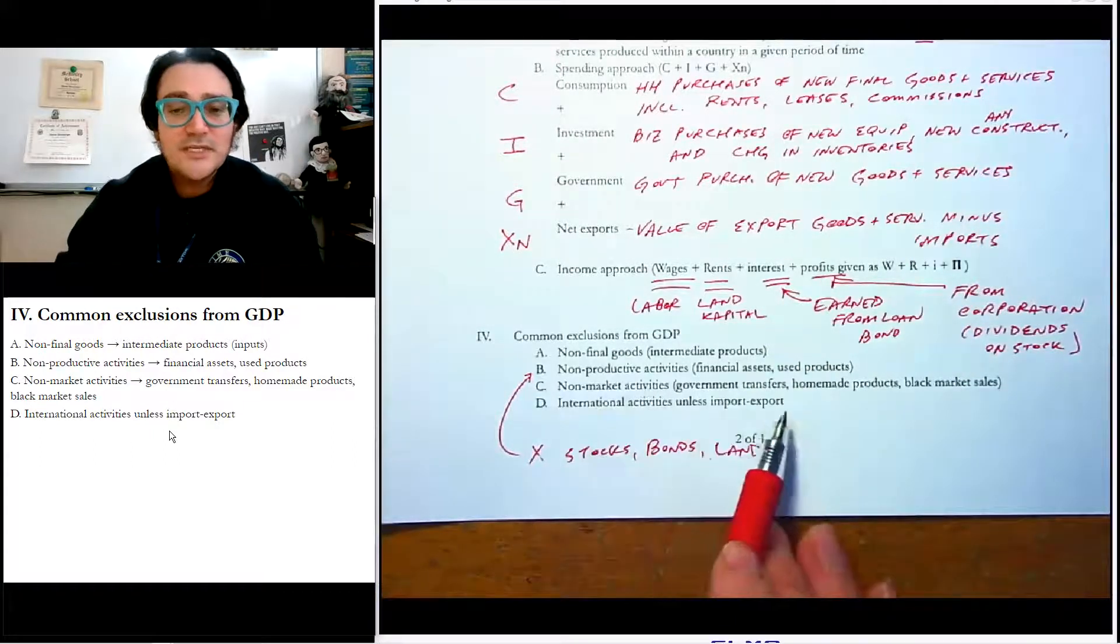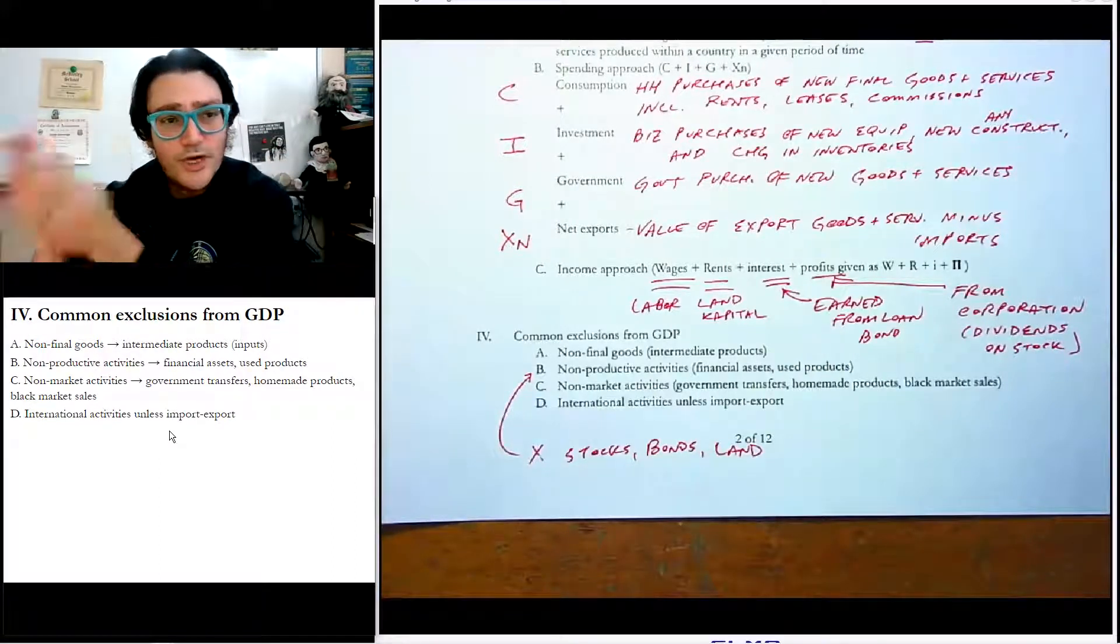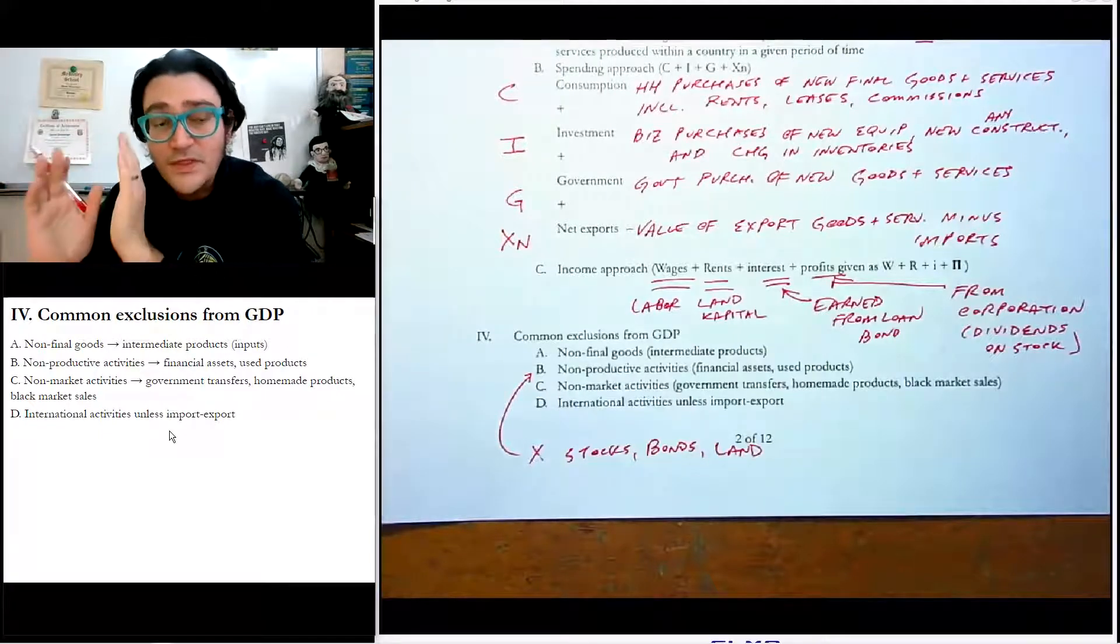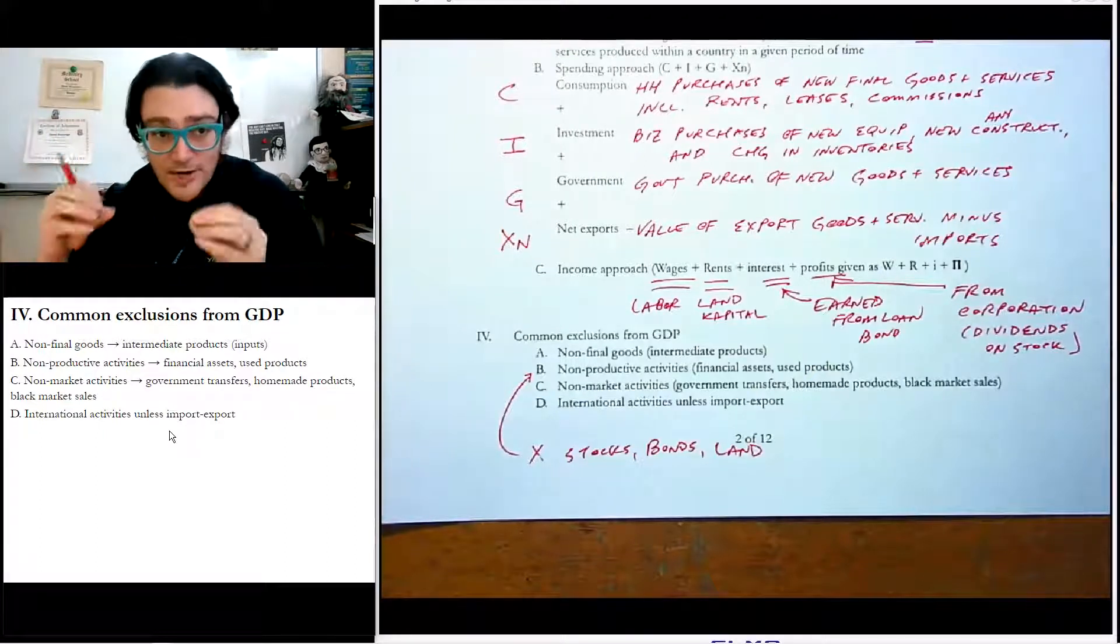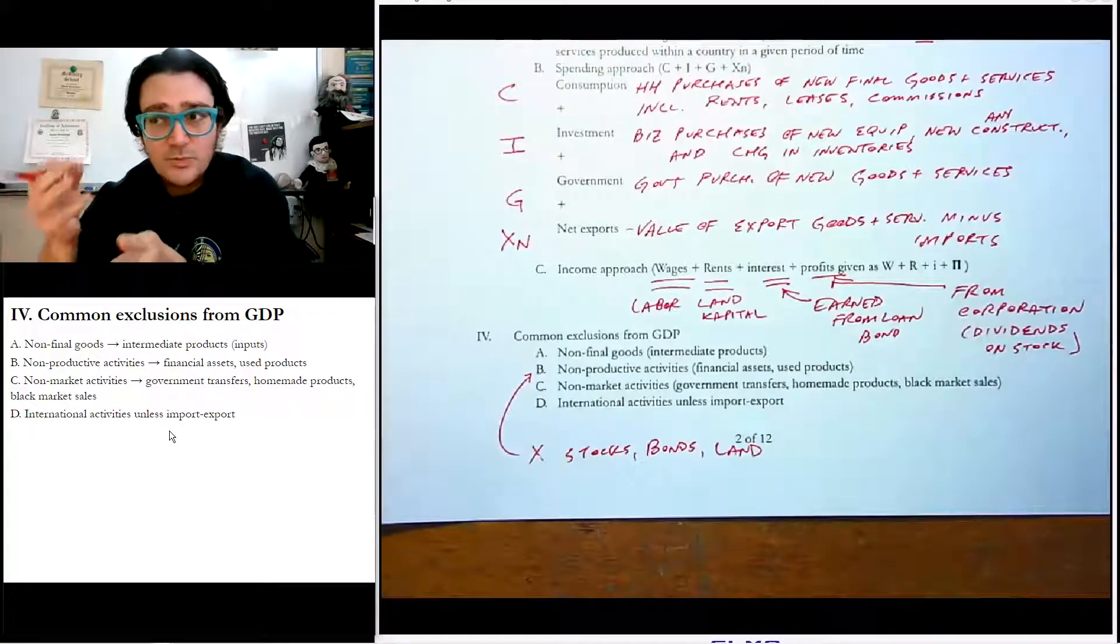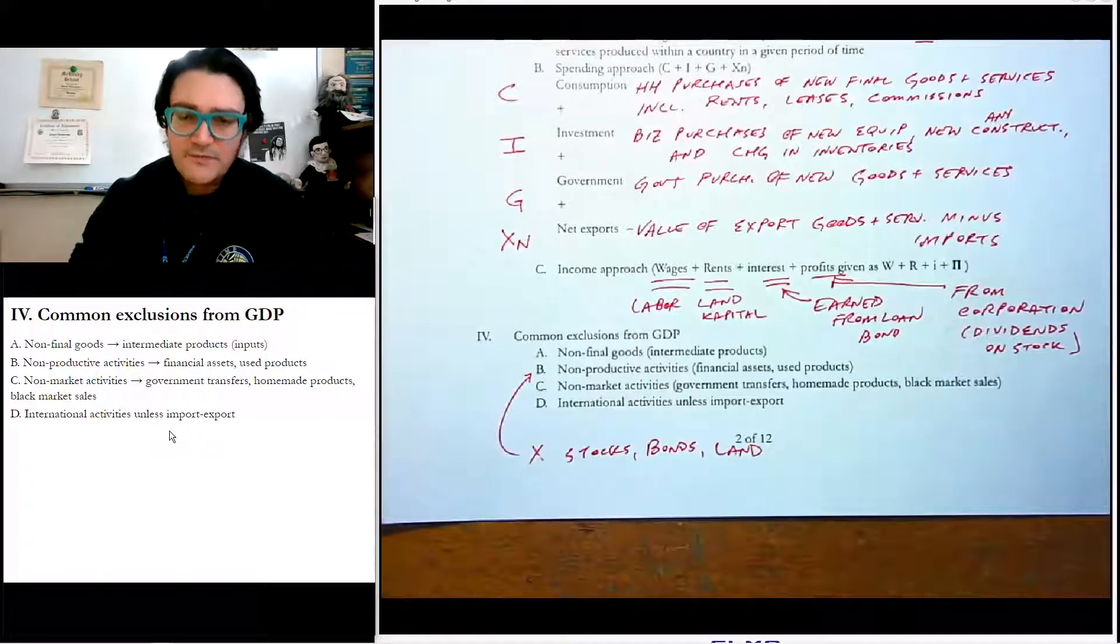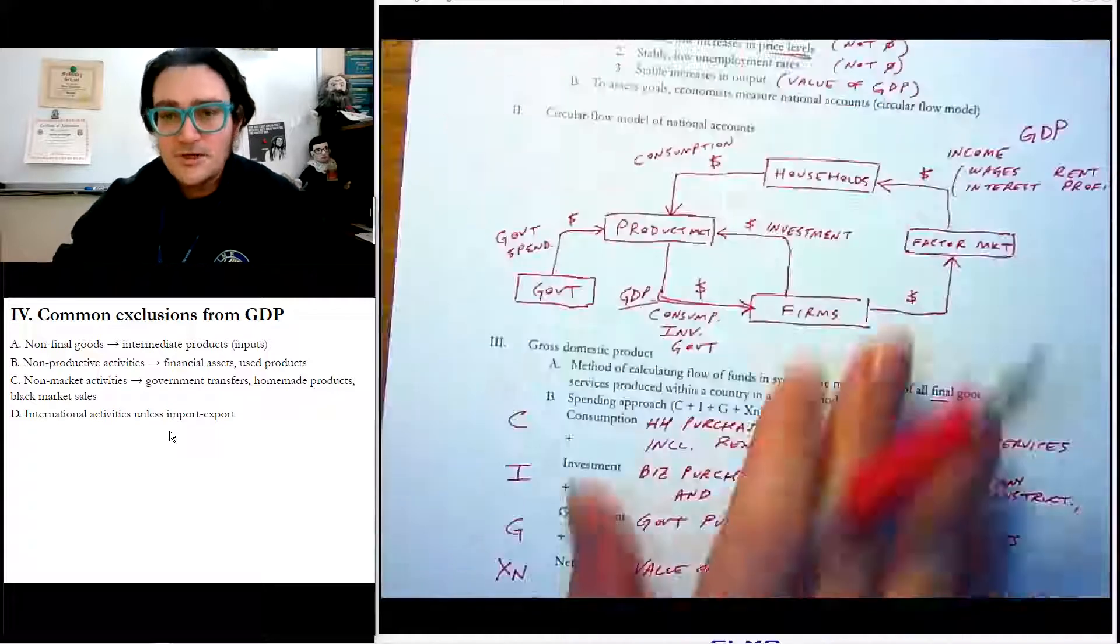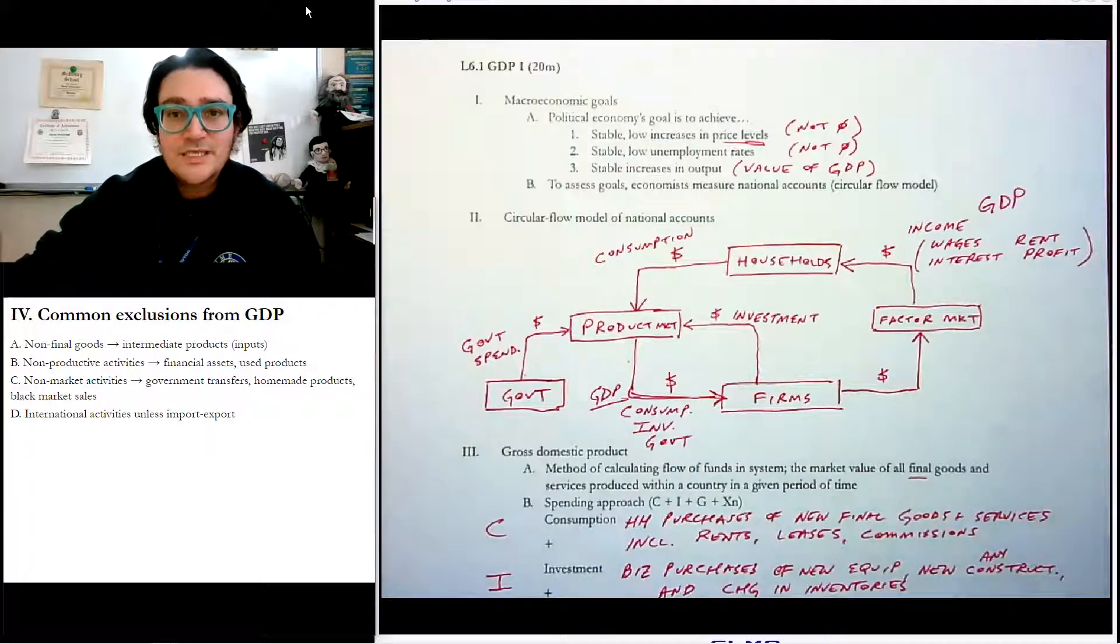The last one is international activities, unless they're an import or export. So for example, I sometimes have students who may be a mom or a dad or somebody, they work in another country. If they work and live in another country, all of that gets counted for that country's GDP. It doesn't matter the nationality of the person. It matters where they are. So if you have immigrants, for example, in the United States and they're producing things, they get counted for the United States. But if you have Americans living in France, they count for France. So unless it's imported or exported, it doesn't count. All right, we're going to do some practice that'll help you kind of isolate which ones are counted and which ones are. Thank you for taking good notes. See you next time.